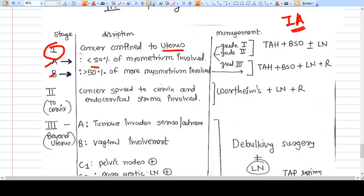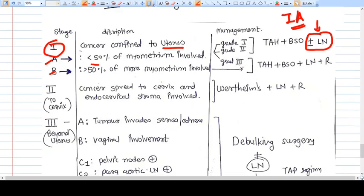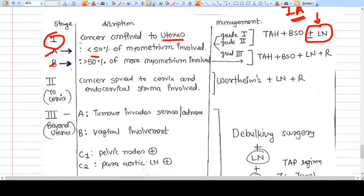But if stage 1a is there and grade 3 is there, or if there is stage 1b - that means more than 50 percent of the myometrium is involved - then you should go for lymph node dissection: TAH, BSO, LN means lymph node dissection.